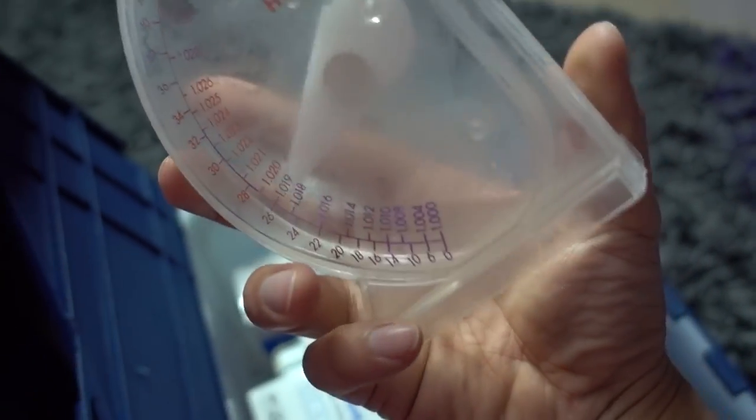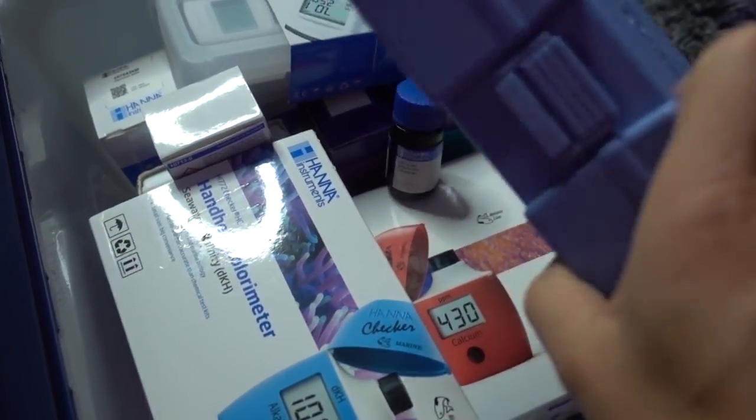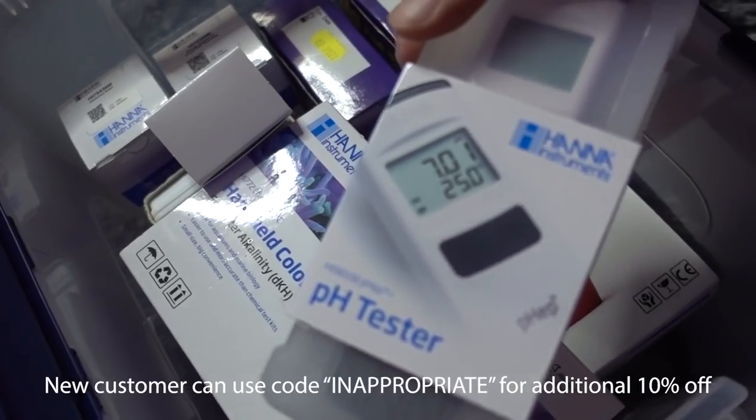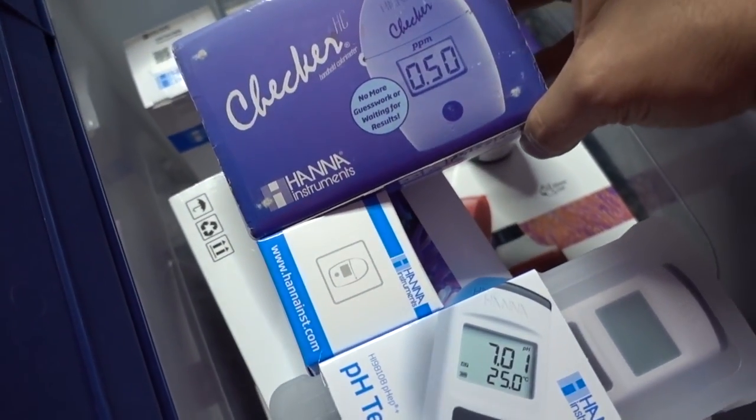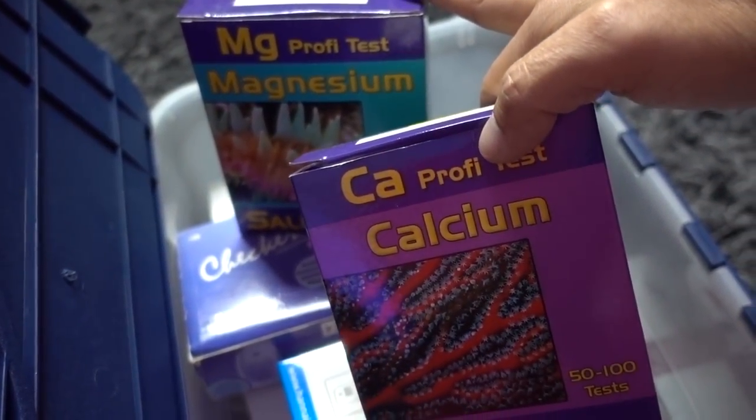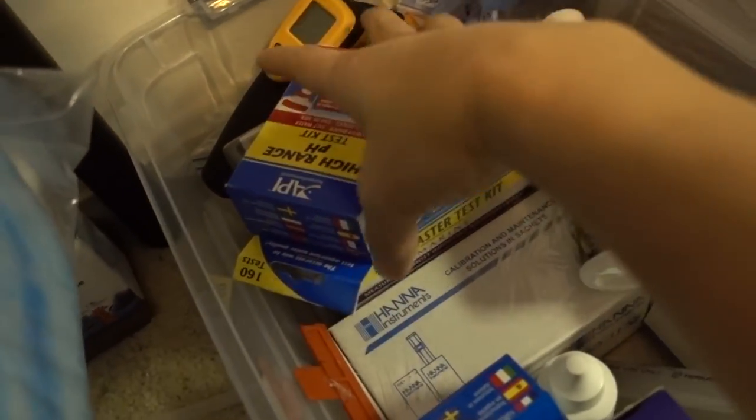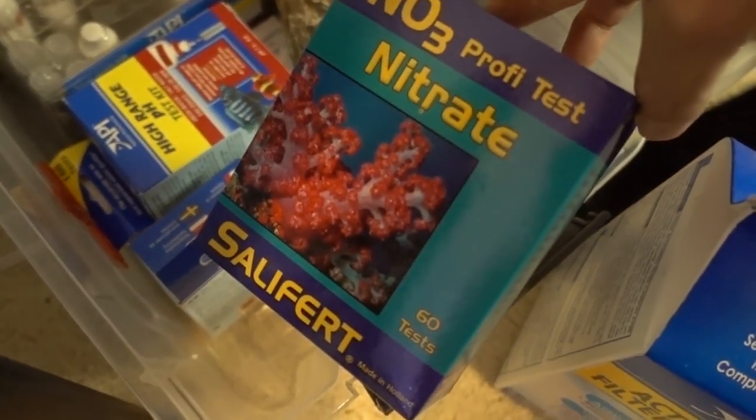First of all, you know it's quality when I have a hydrometer in the test kit box. Now, that aside, I do have a refractometer, Hannah ALK and calcium checkers, the Hannah pH tester, the phosphate checker - this is really old actually - and also magnesium and calcium test kits from Salifert. Those are my A-team in terms of test kits.